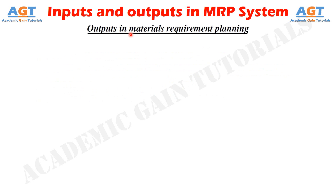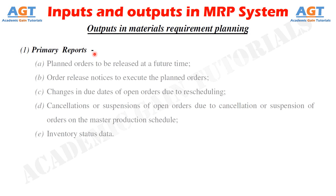The MRP program generates different reports as output, which are important for production managers in making decisions. Output number one is primary reports — the main reports used for inventory and production control. These consist of: planned orders to be released at a future time; order release notices to execute planned orders; changes in due dates of open orders due to rescheduling; cancellations or suspensions of open orders; and inventory status data.